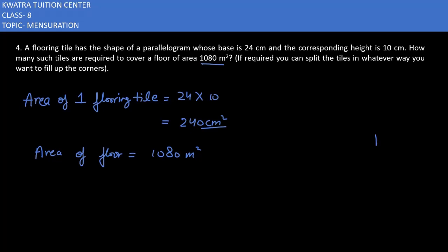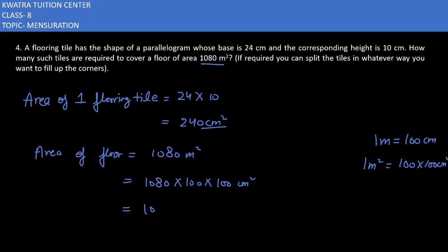So what do you have to multiply to convert meter square to centimeter square? You multiply by 100 into 100, because one meter equals 100 centimeters. So multiply 1080 with 100 into 100, and you will get 1080 followed by four zeros in centimeter square.